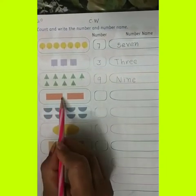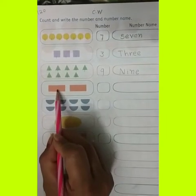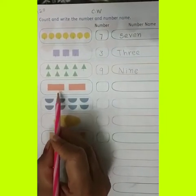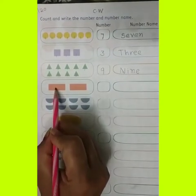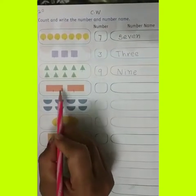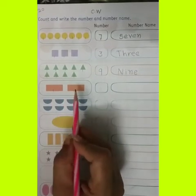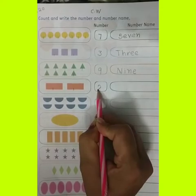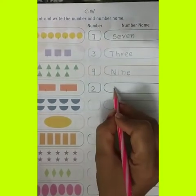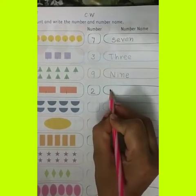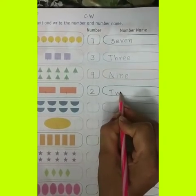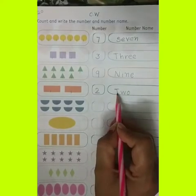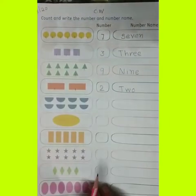Which picture is this? These are rectangles. Let's count: 1 and 2. These are 2 rectangles. So you can write down here number 2. Spelling: T, W, O — 2. Again: T, W, O — 2.